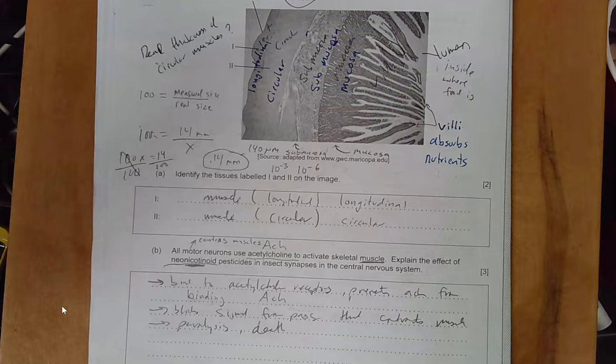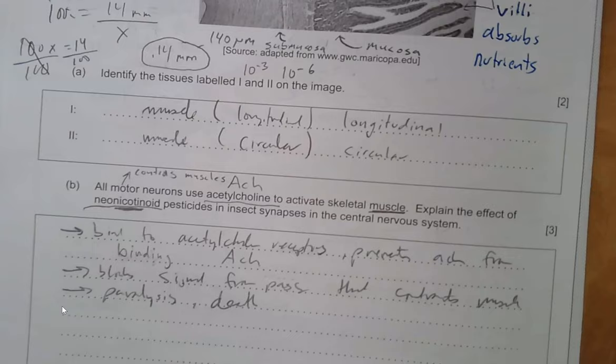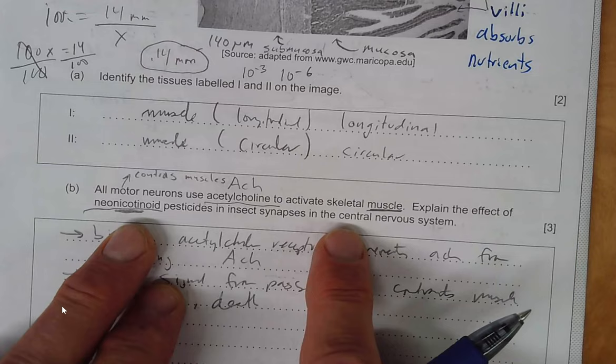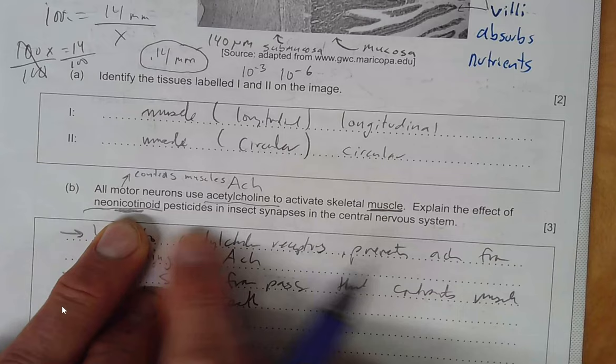A neurotransmitter actually called acetylcholine and what is the effect. It's used to activate skeletal muscles. What's the effect of these pesticides on insect synapses?